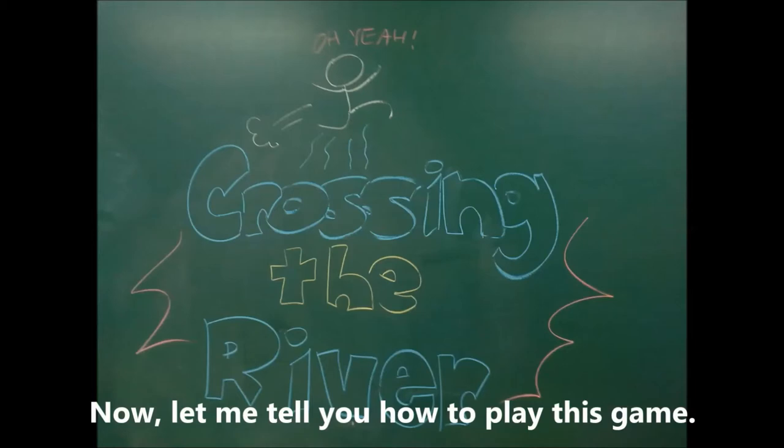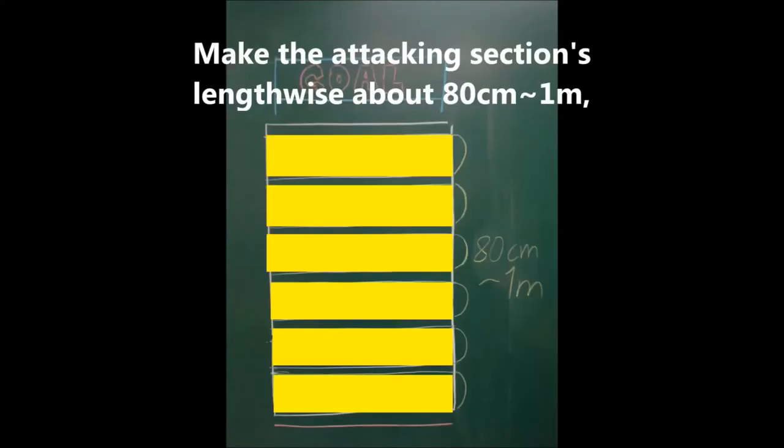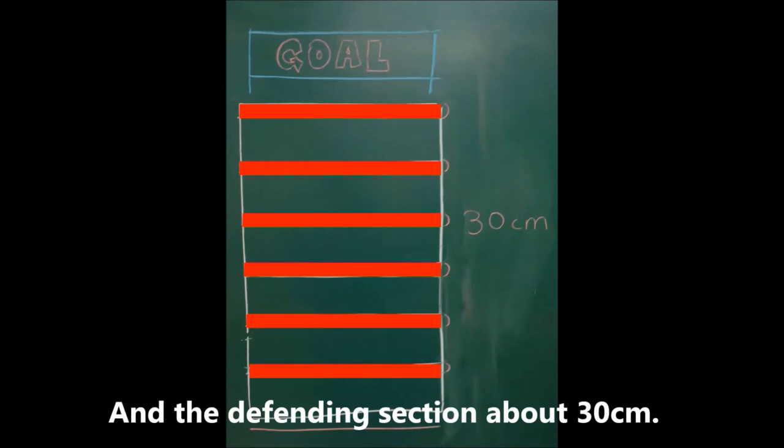Now, let me tell you how to play this game. First, you should draw the position lines. Make the attacking sections lengthwise about from 80 cm to 1 m and the defending section about 30 cm.